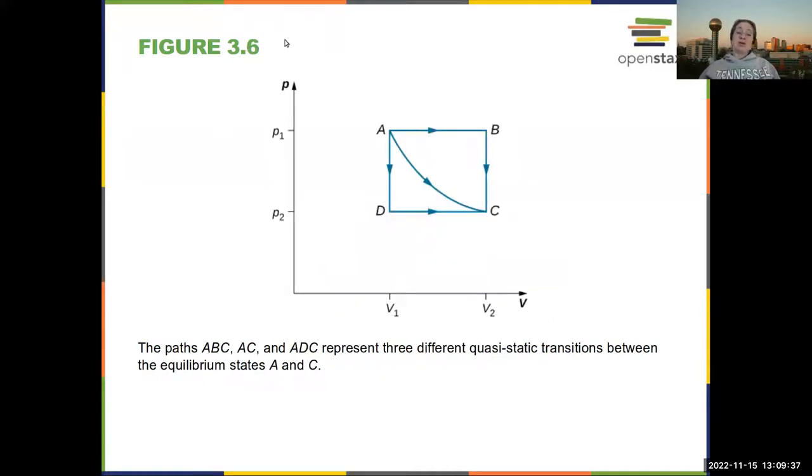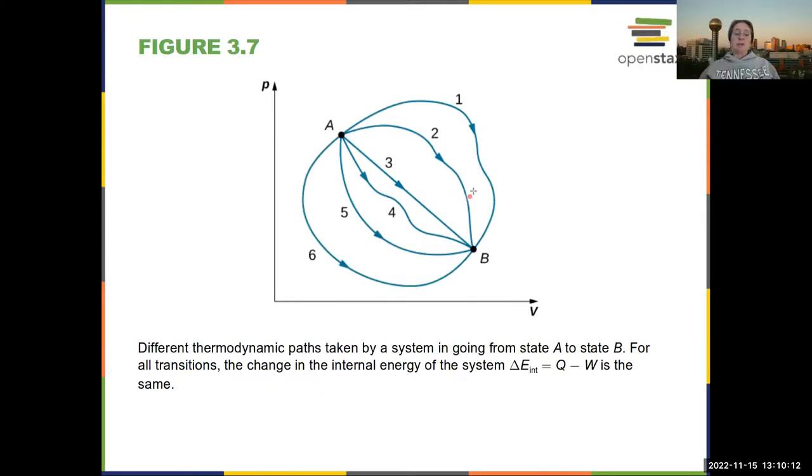Okay, so here you have four different points, and you can have different ways of going along that point, and they're going to have different amounts of work. So remember work is the area under the curve, so if you go from A to B to C, you do more work than if you go from A to C this way. So they are all quasi-static, meaning that they happen slow enough that you don't have to worry about things being out of equilibrium.